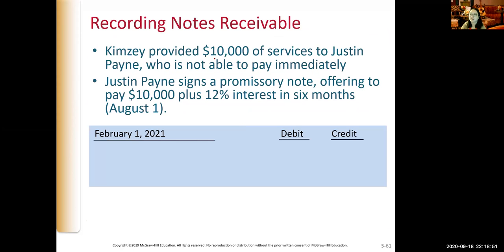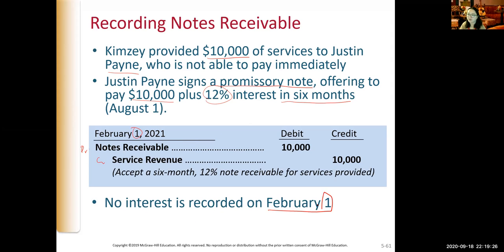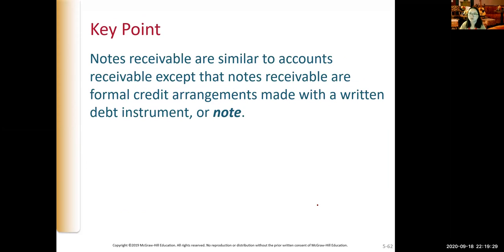Kinsey provided a $10,000 service to Justin Penn, who was not able to pay immediately, so Justin Penn signed a promissory note. We debit notes receivable and credit service revenue for $10,000. No interest is reported on the date of initiation of the notes receivable.